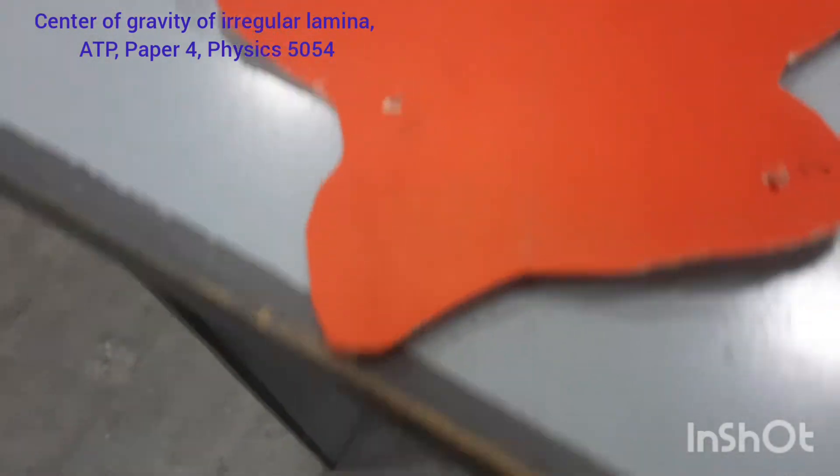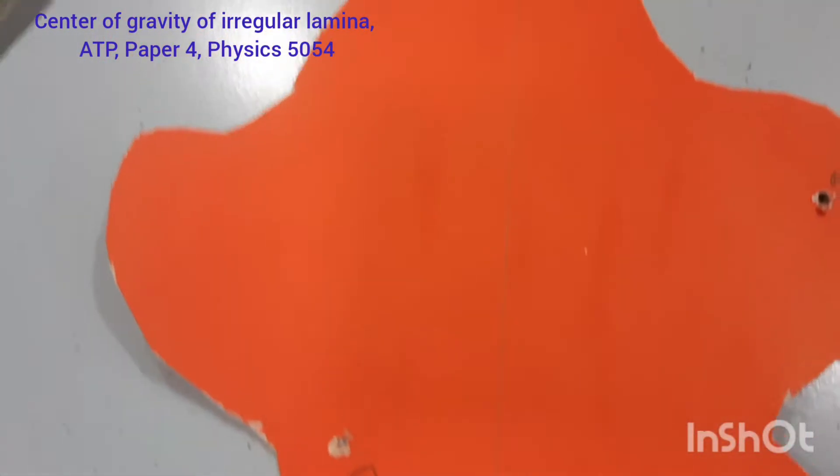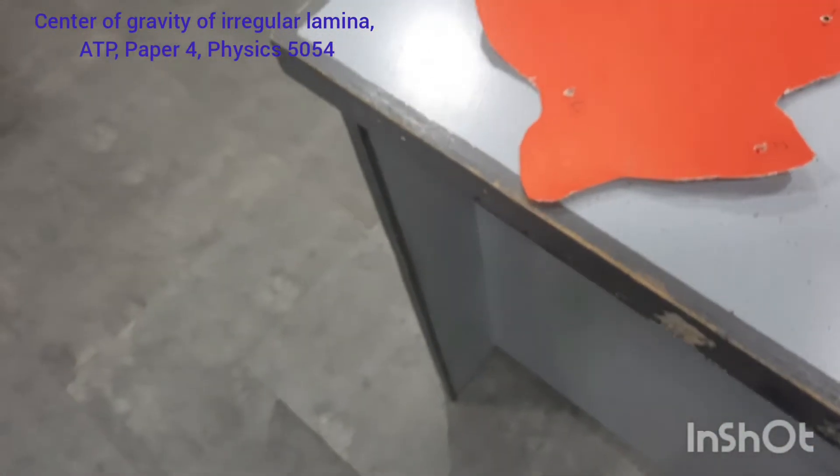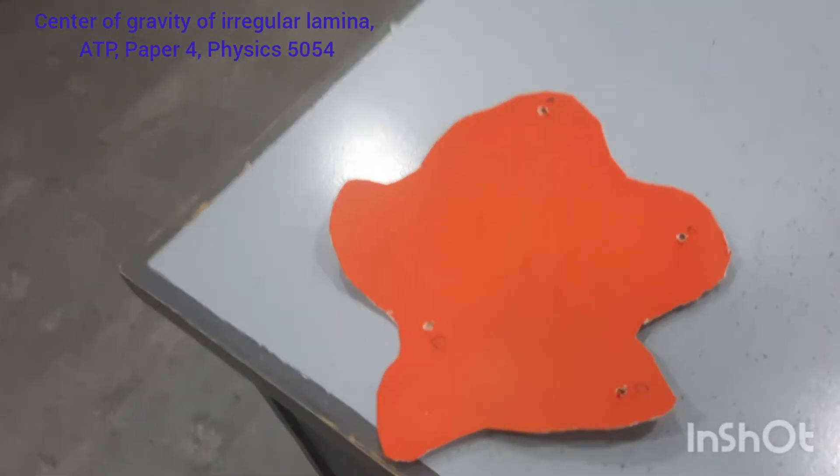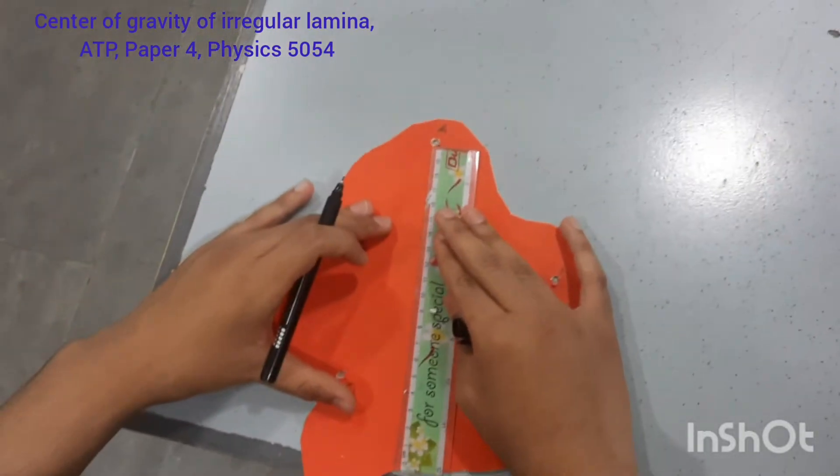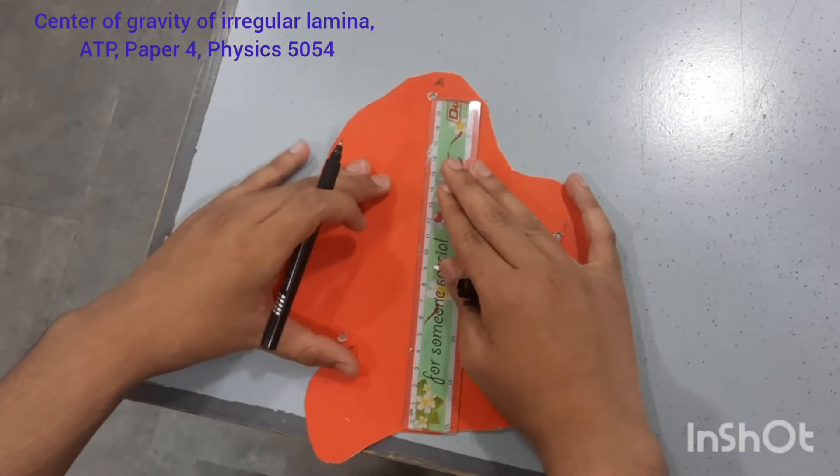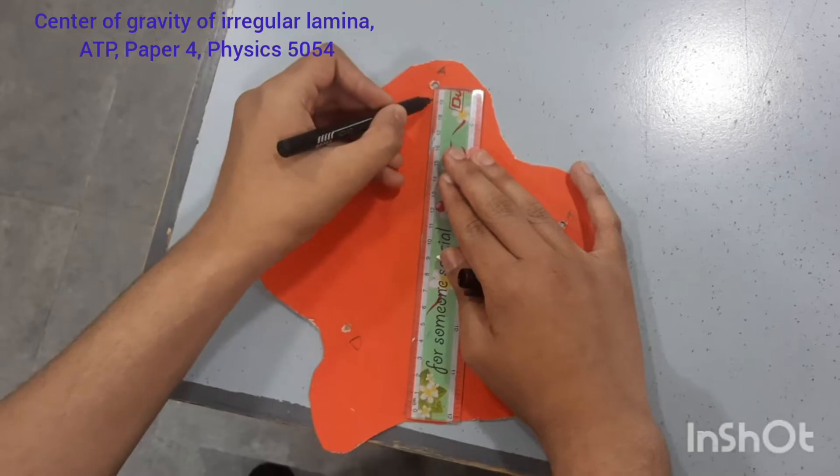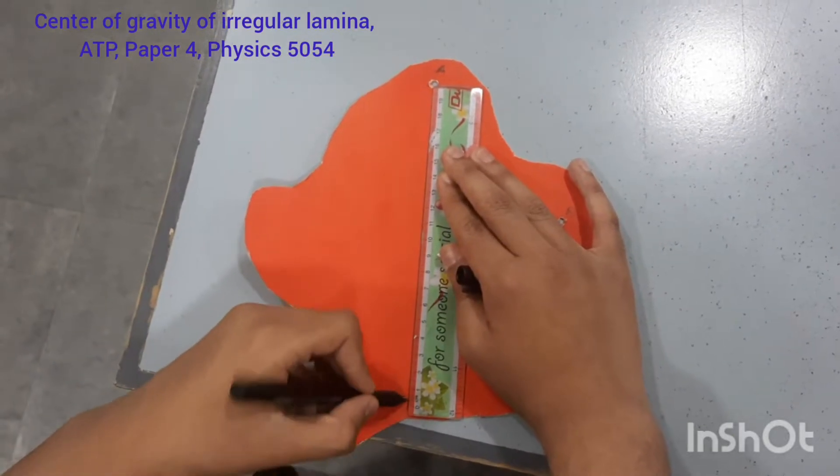So this shows the thread of the lamina. Let me show. Mark this line with that ball point, the black one, so that it is visible. With the pencil it is not that visible.